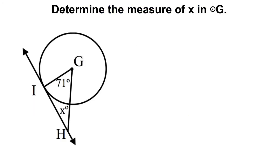Here's another example. This time we've got circle G, which means G is the center of the circle. Again, I've got a tangent line here. HI is a tangent line, and GI is a radius, which means I have a 90-degree angle.